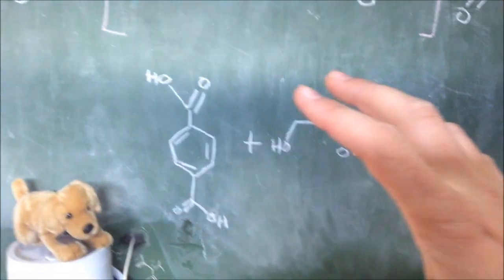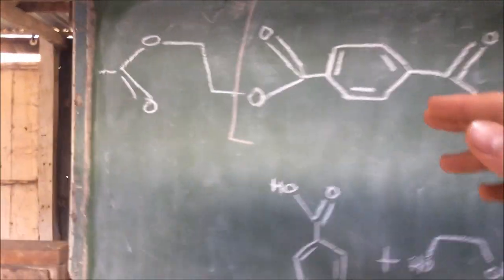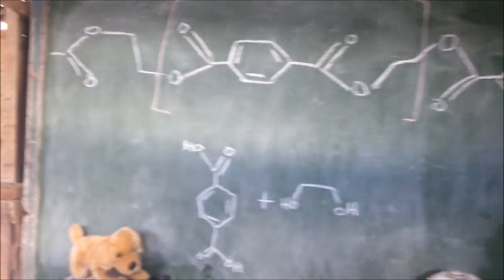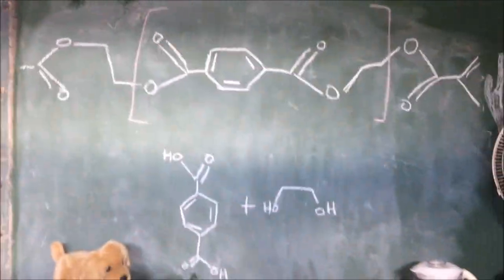So obviously we want this terephthalic acid and that's a solid and this is a liquid obviously, ethylene glycol. So this in all respects looks like a simple hydrolysis reaction. We just cleave this bond here, add water and then we get this. The problem remains that this is actually quite a difficult hydrolysis reaction.